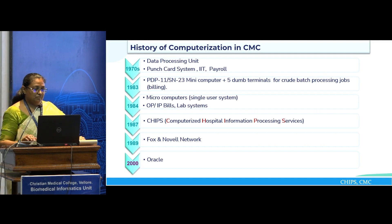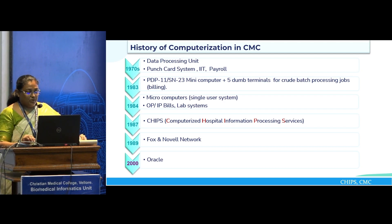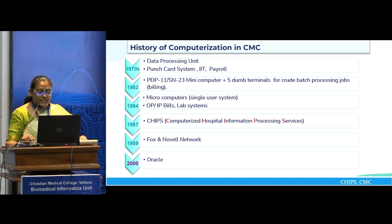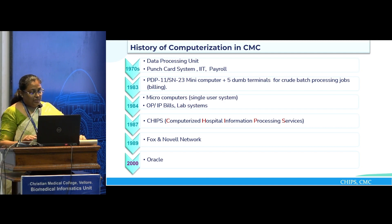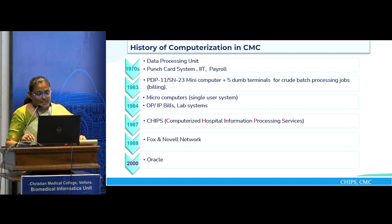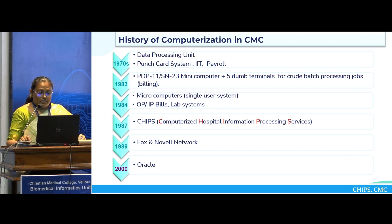I would like to start with the history of computerization that happened in CMC. In the 1970s, we started with a data processing unit, which is a punch card system — they used to take this to IIT to process payrolls. Then in 1983, we had the PDP-11 SN23 mini computers with five dumb terminals for crude batch processing jobs like billing. In 1984, they had microcomputers, which were basically single-user systems for OP and IP bill processing. In 1987, the Department of Chips, which is a Computerized Hospital Information Processing Services, was started. In 1989, we had the Fox and Novell network. In 2000, we started with Oracle, initially with patient results and pharmacy, and slowly many other modules were added.